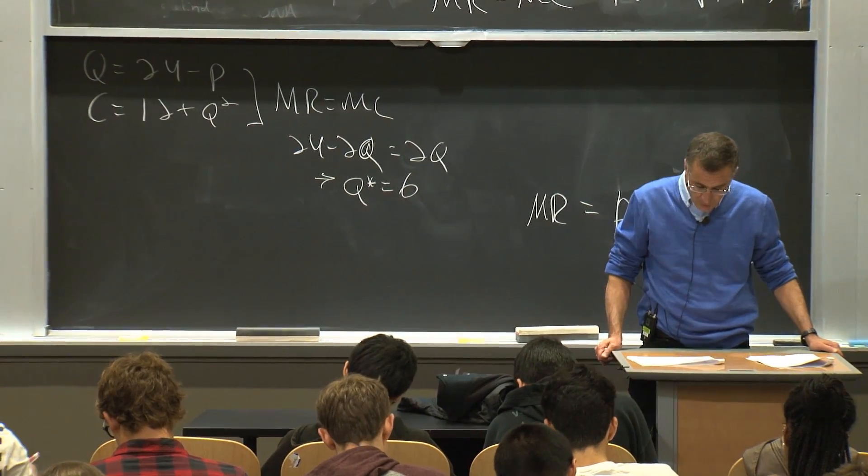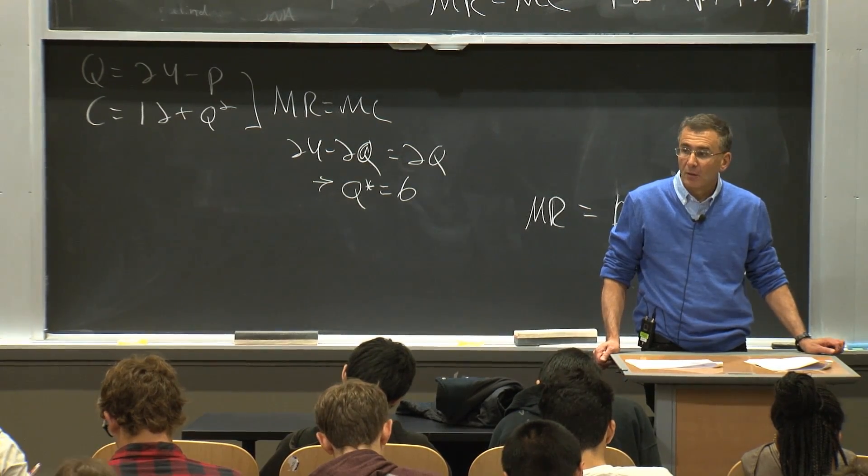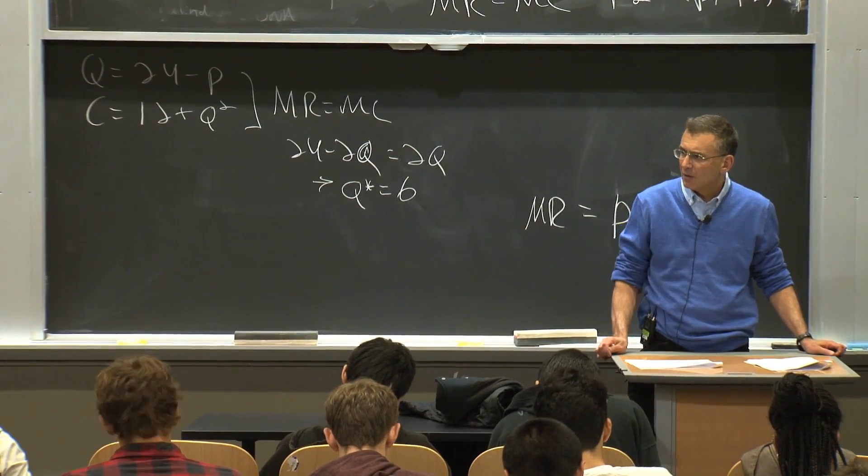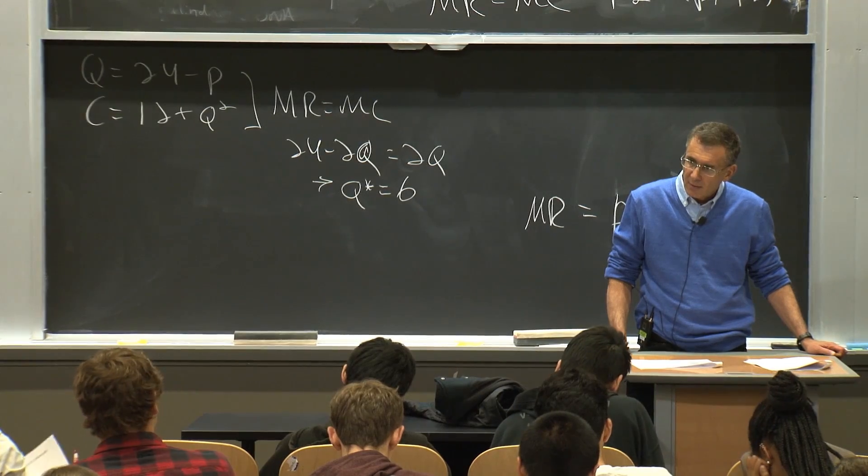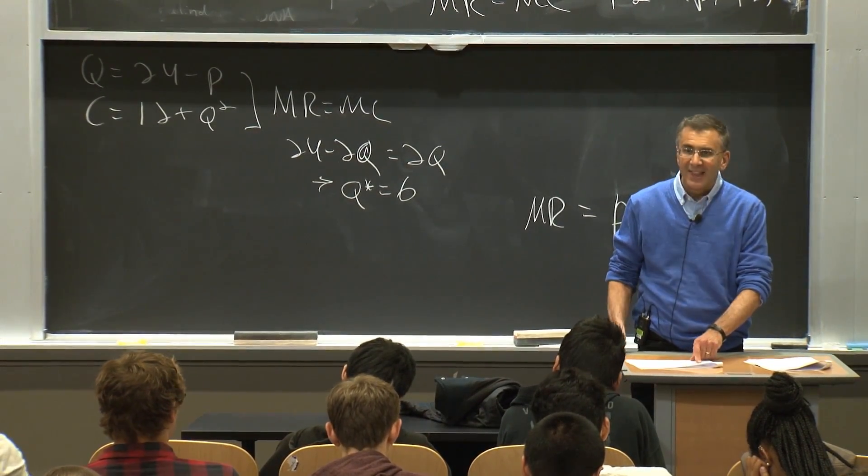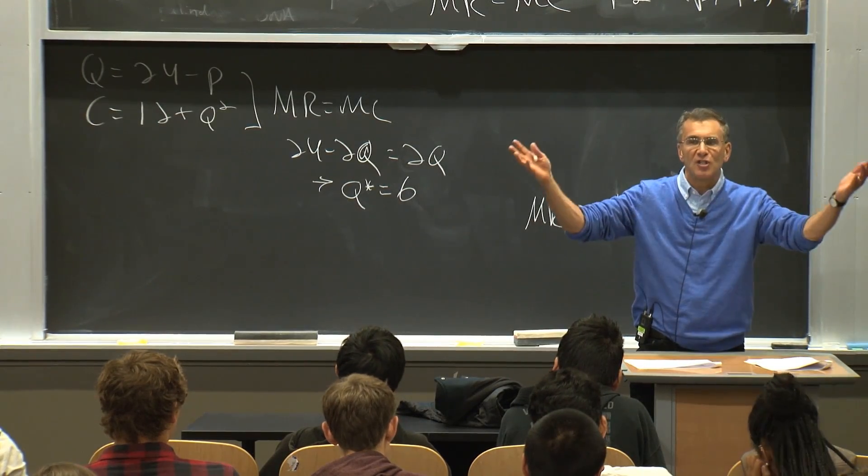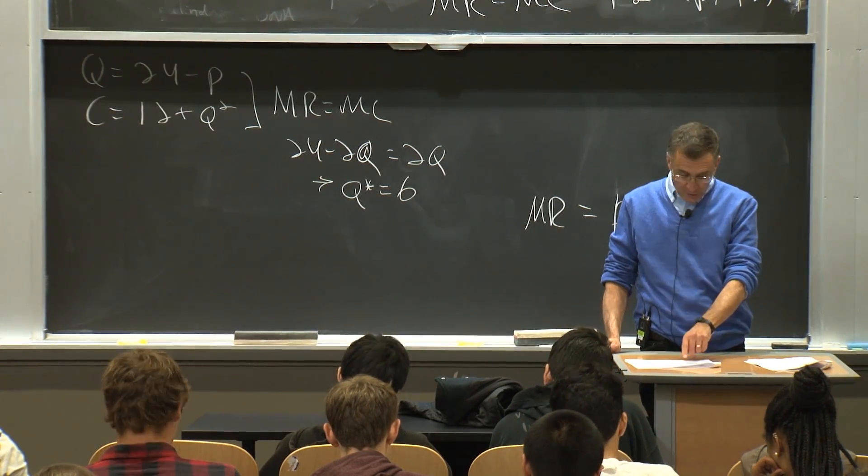Now, what's the price? Quantity 6. What's the price? Who said 18? Someone said 18. Why? You match. Yeah. This is good. But usually, less intelligence. Previous years weren't as smart as you guys. They would say 12, because they'd say, well, look.